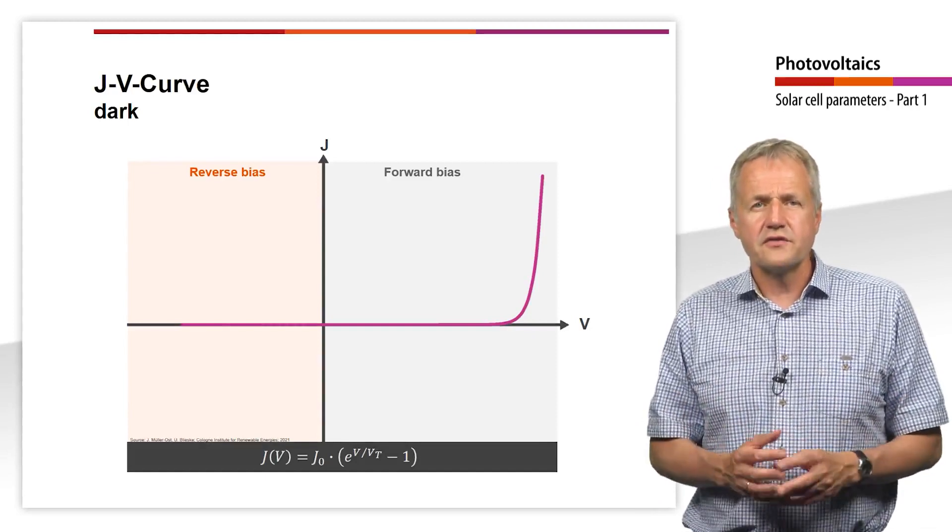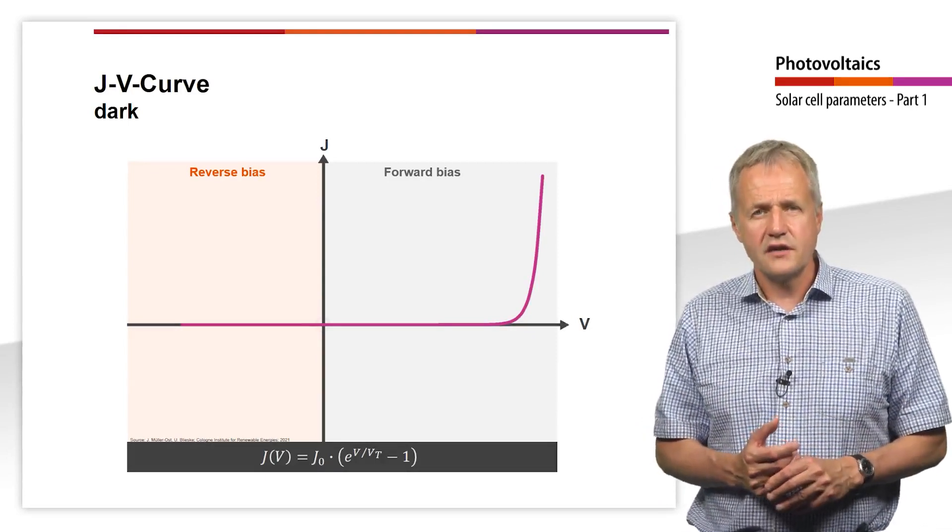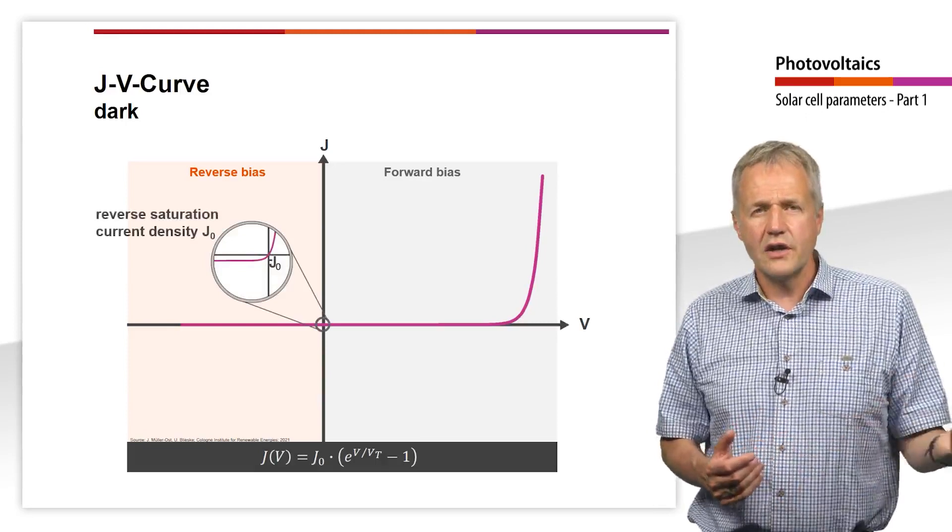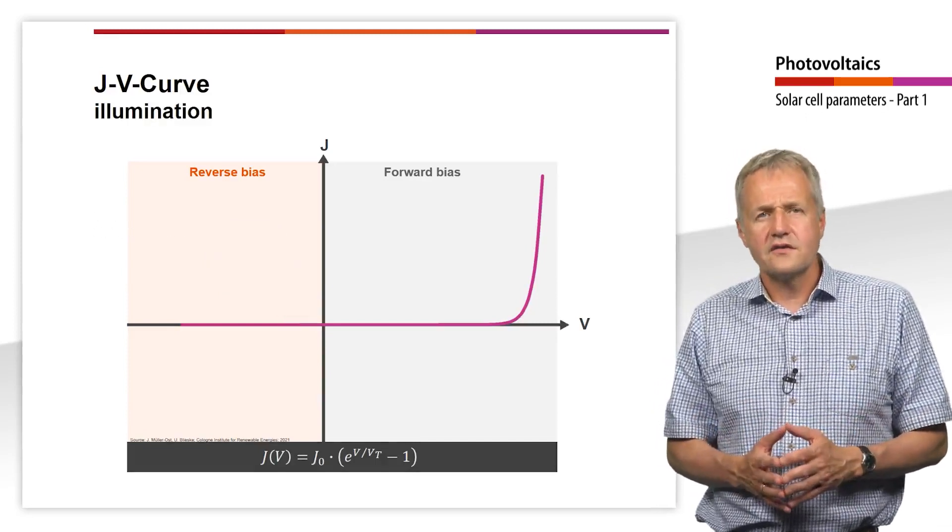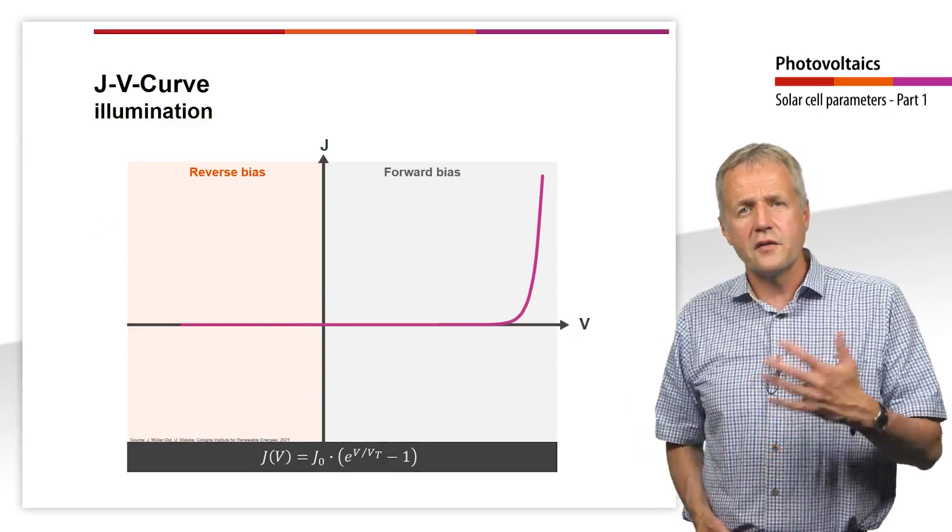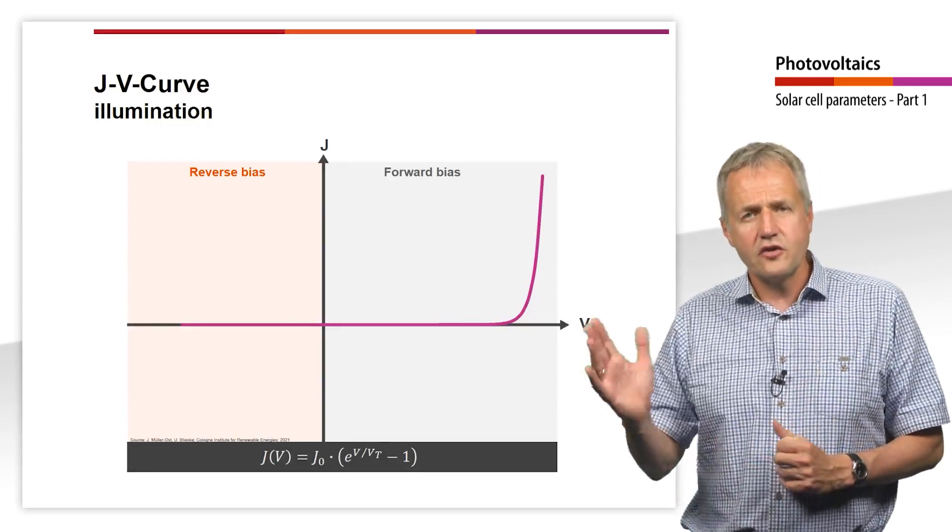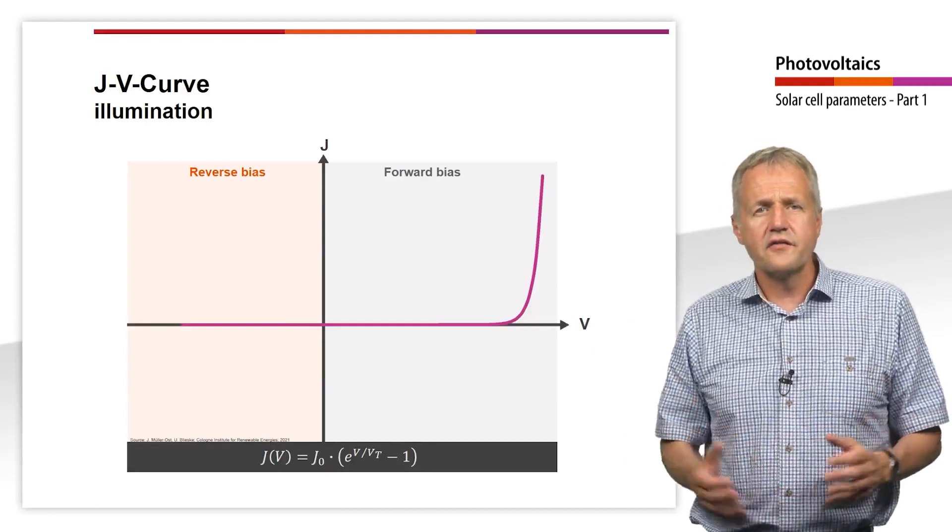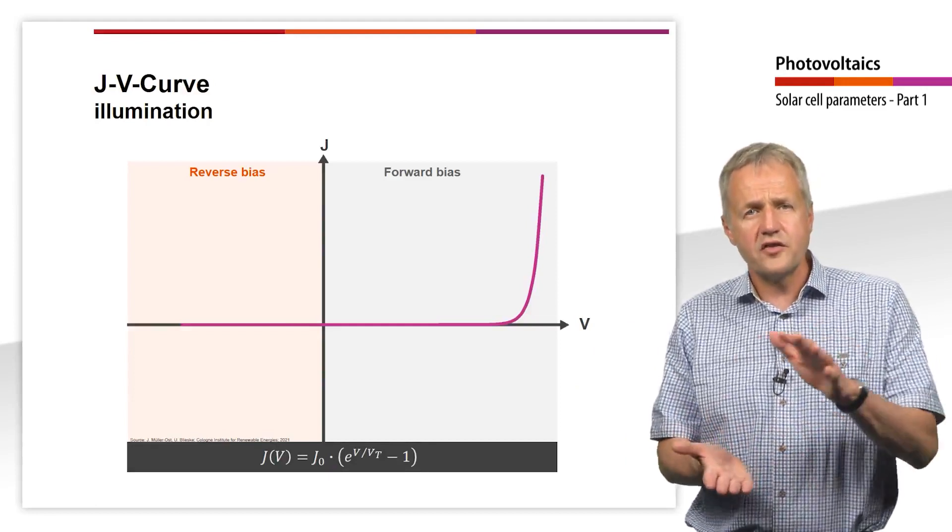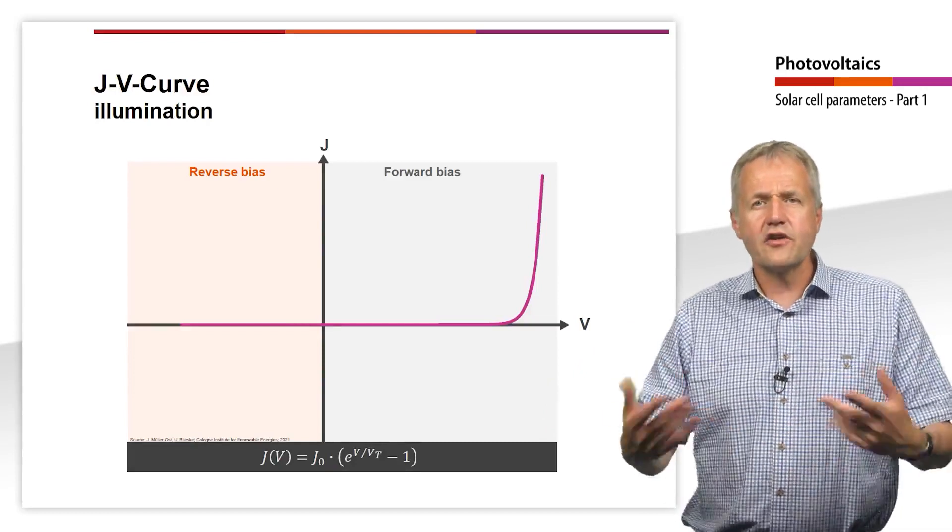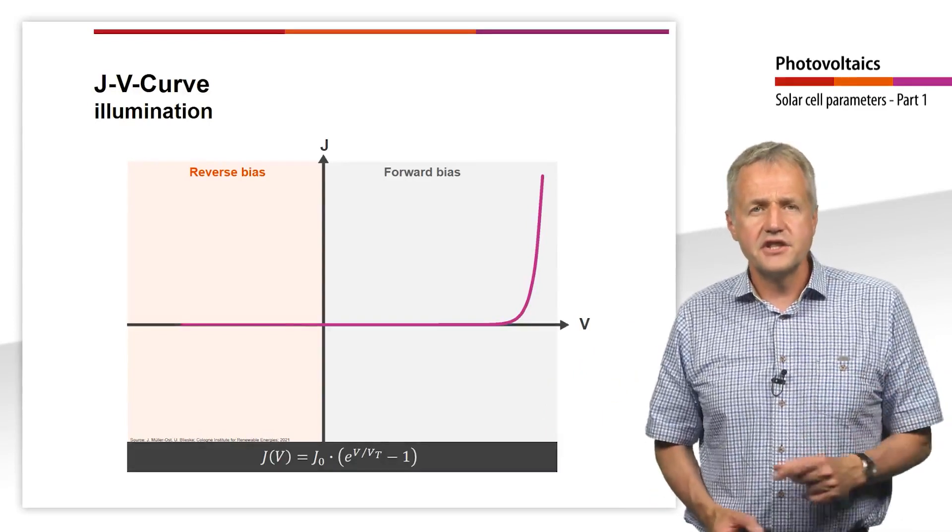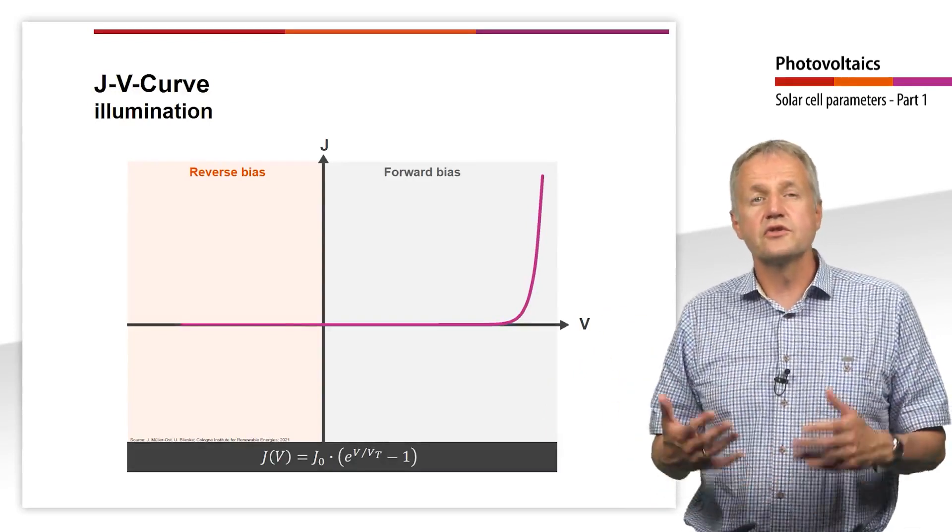The reverse saturation current density, J0, therefore is very low. Under forward bias, on the other hand, the diffusion current of the majority charge carriers dominates. The electrical field of the depletion region becomes smaller with increasing voltage, and more and more electrons have enough energy to overcome it and contribute to the current flow.